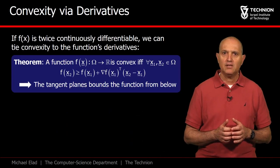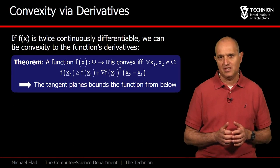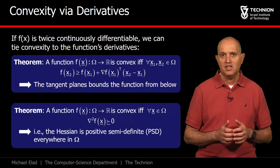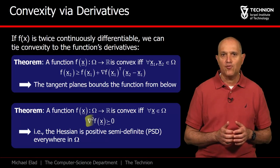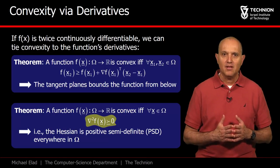Using the second derivative, we get the simplest definition for convexity. If the Hessian is a positive semi-definite matrix for all x in the domain omega, one can conclude that the function is convex.